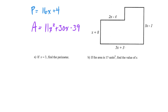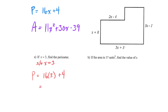We're back. For problem A, if x = 3, find the perimeter — that's straightforward. We sub in x = 3: 16 × 3 + 4 = 48 + 4 = 52. It doesn't tell us units, so you can just leave it as 52. If you want, you can write 'units' — either way is fine.